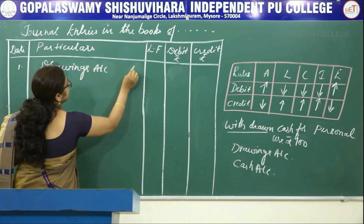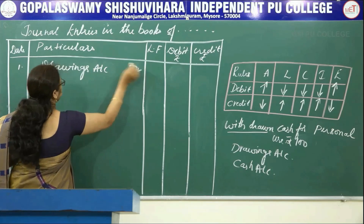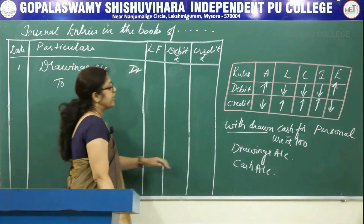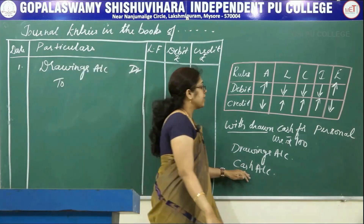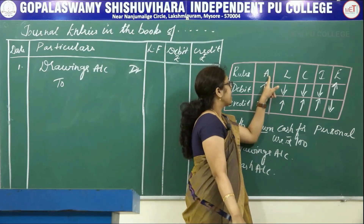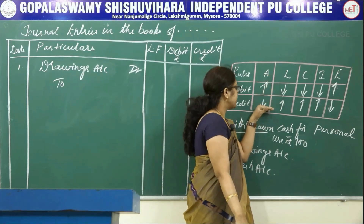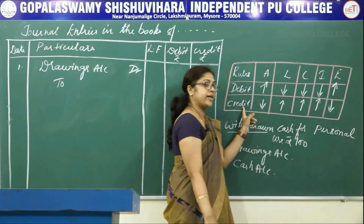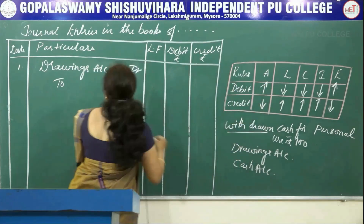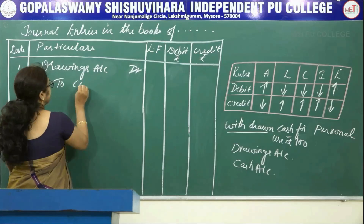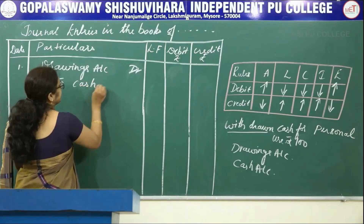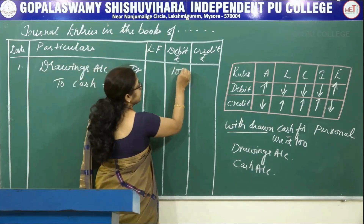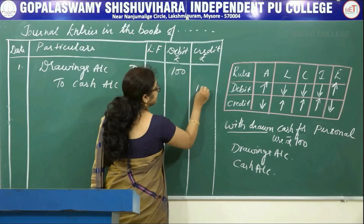Drawings account debited to. Cash comes under asset. Asset reduces means it has to be credited. So, credit the cash account amounted to rupees 100.